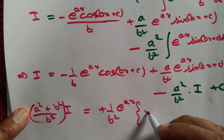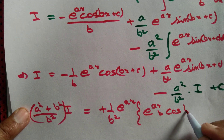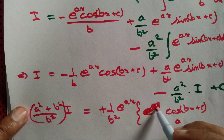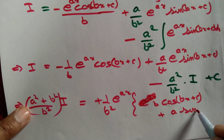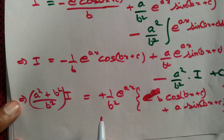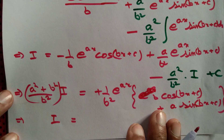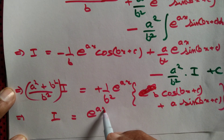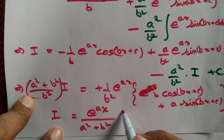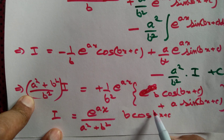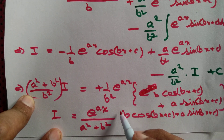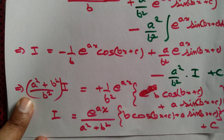After cancelling b squared, we are left with i equal to e to the power ax divided by a squared plus b squared, times the quantity b cos bx plus c plus a sine bx plus c. Lastly we add the constant of integration and we are done.